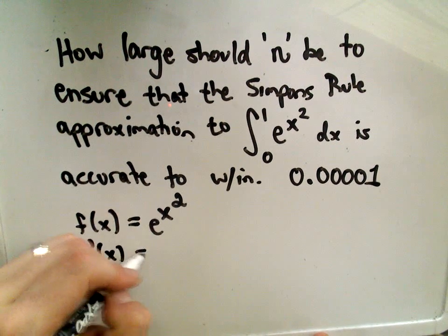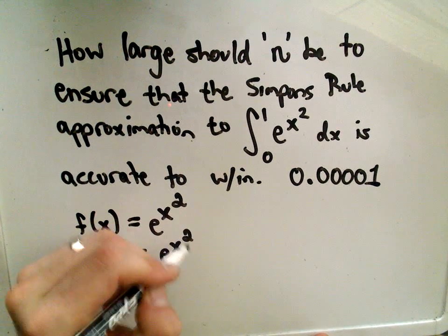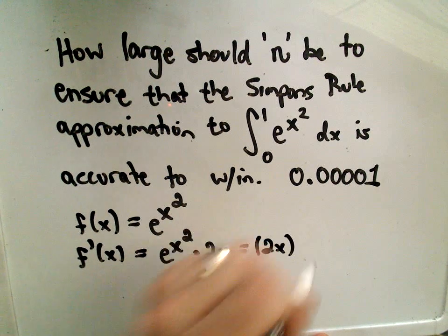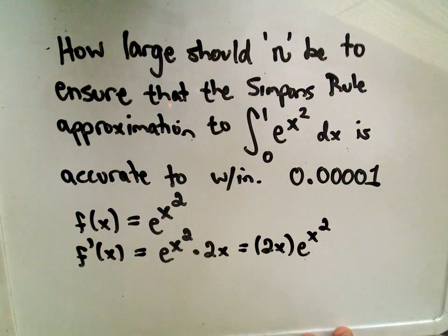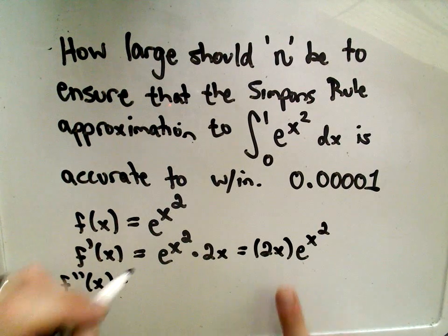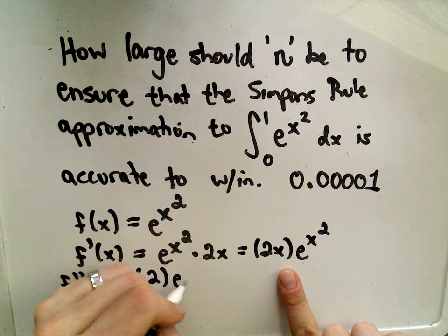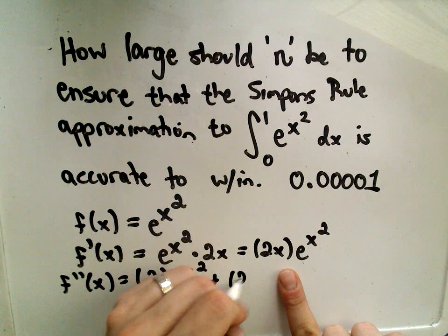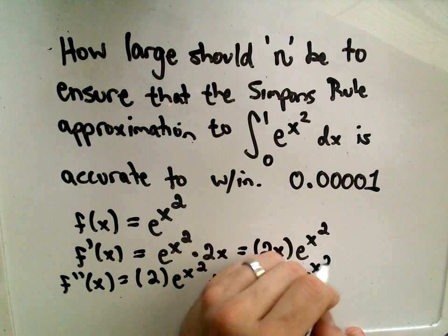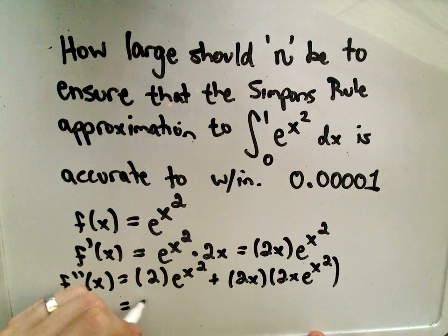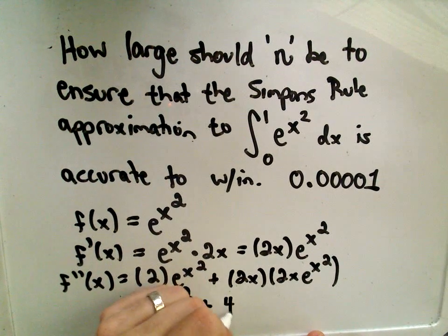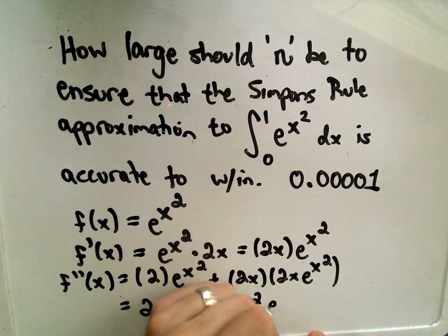So the first derivative: we would get e to the x squared, and then we would have to multiply that by 2x, or equivalently, we'll get 2x·e^(x²). When I take my second derivative of this, we'll have to use the product rule. So the derivative of 2x will just be 2, times e^(x²), plus leave the 2x alone — when we take the derivative, we'll pick up another 2x·e^(x²). That gives us 2e^(x²) plus 4x²·e^(x²).